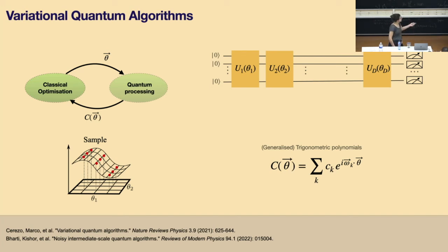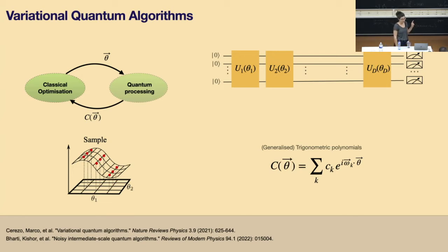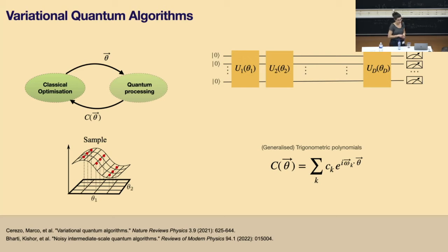While in this talk I'm not going to be directly concerned with variational algorithms per se, I do want to show you a couple of examples of how noise affects parametrized circuits that have a specific structure, and hopefully those examples will be dramatic enough that you will stay until the end of the lecture.